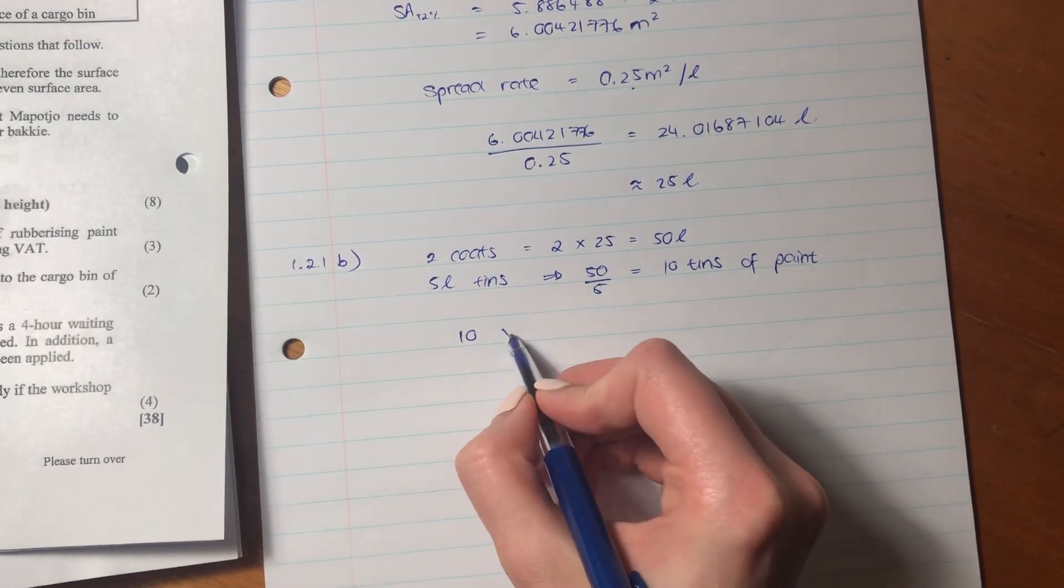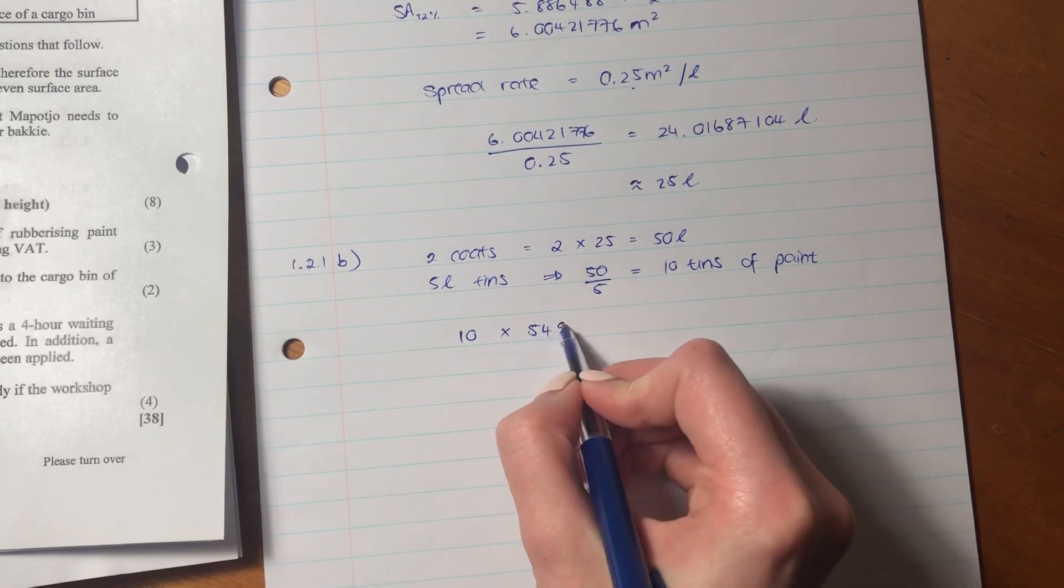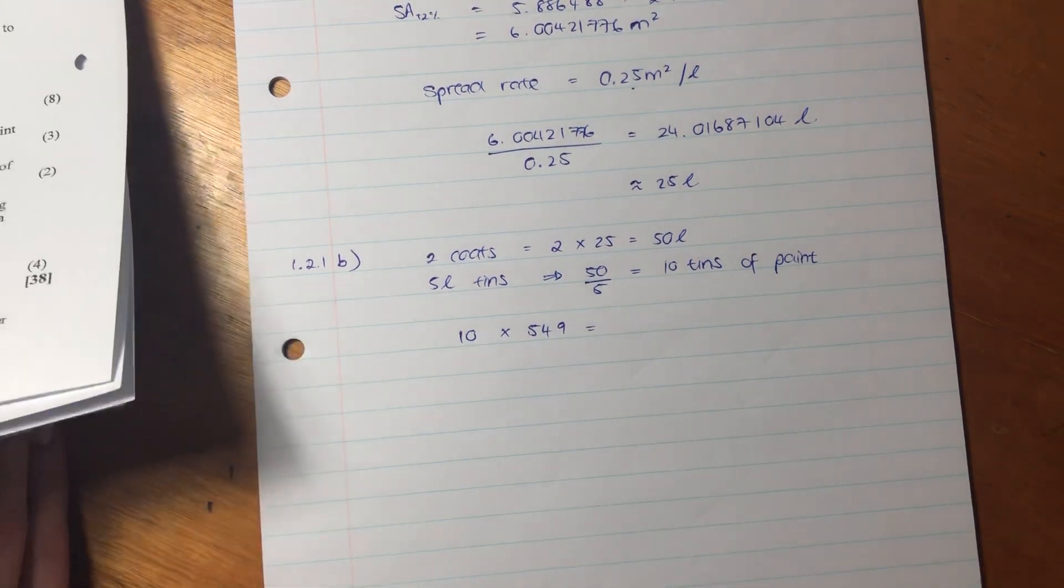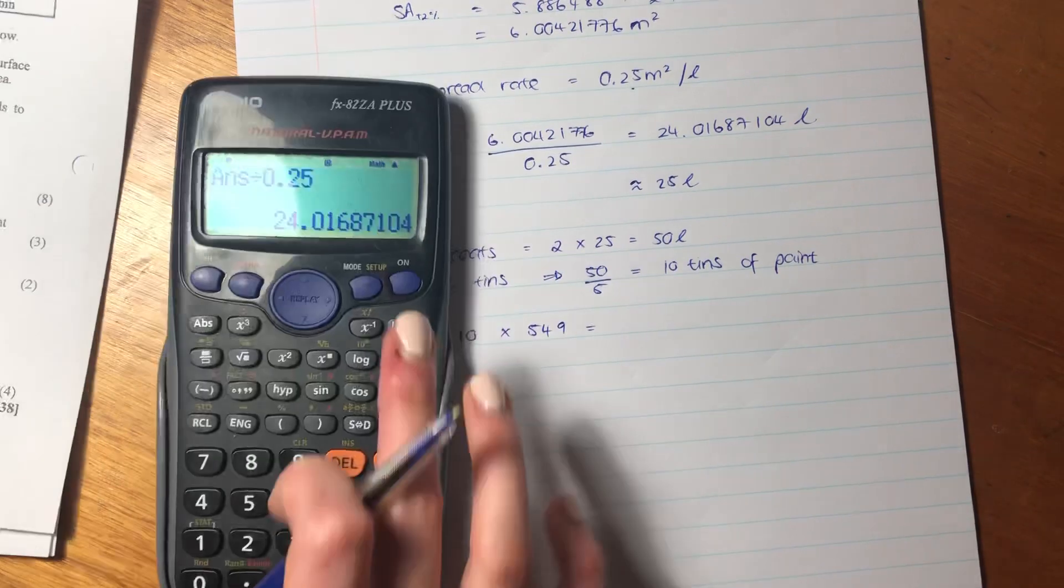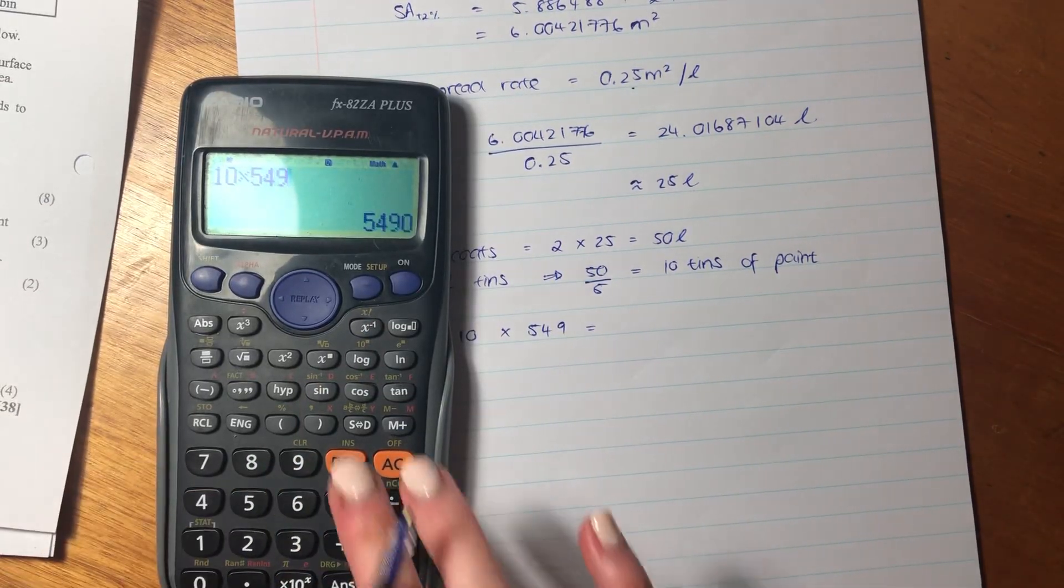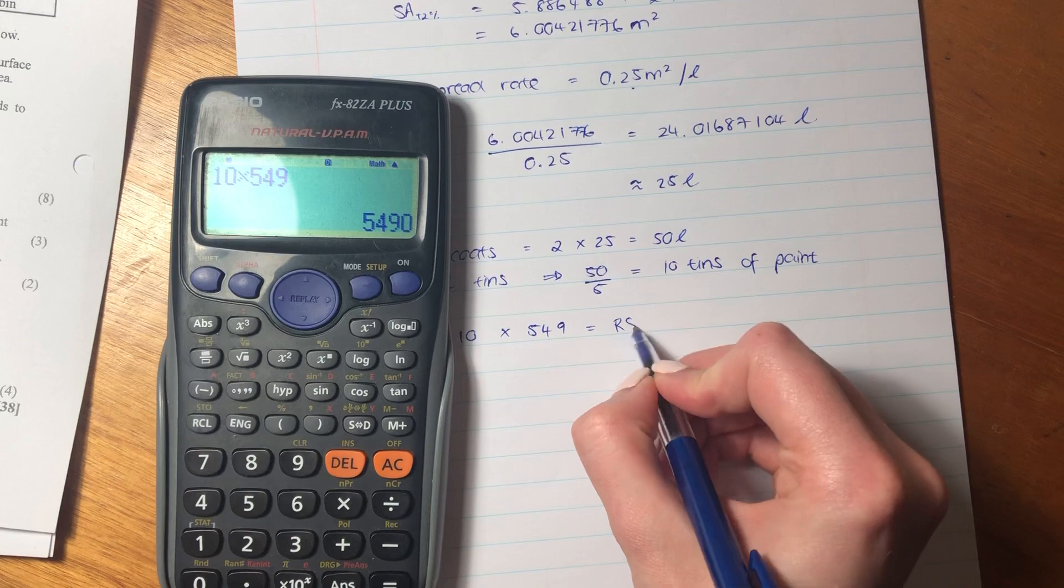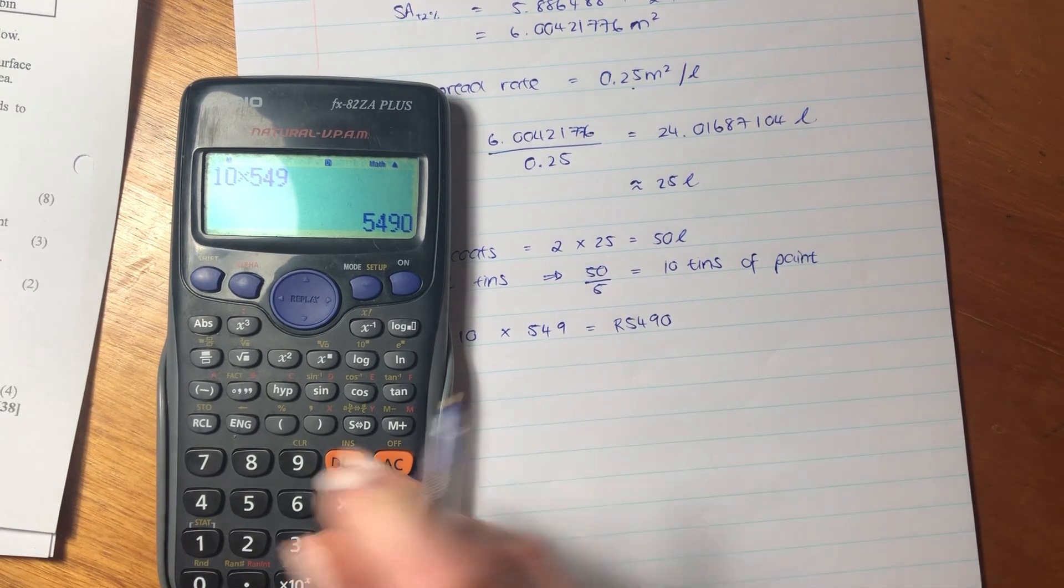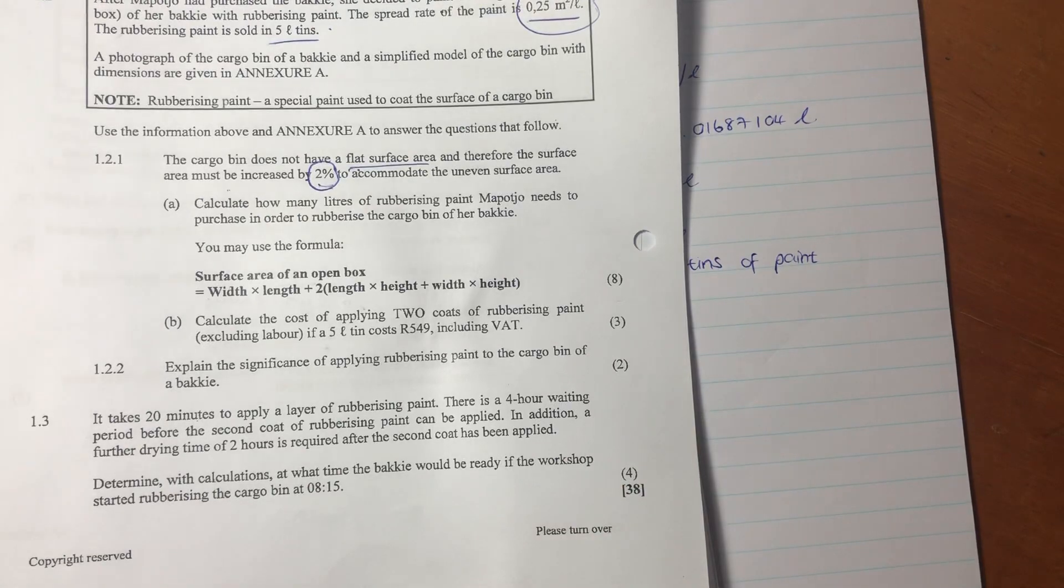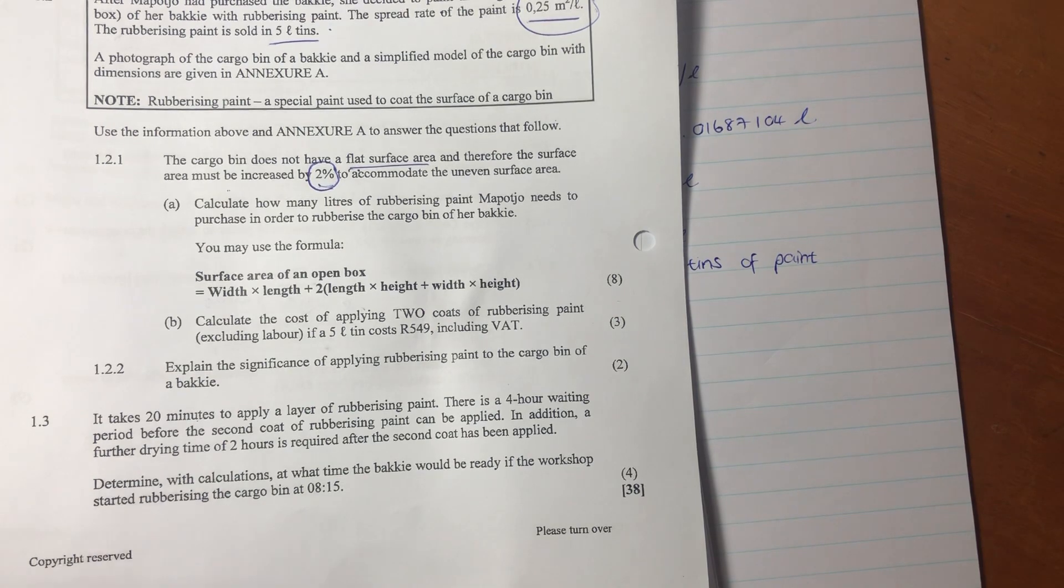So she needs 10 tins. So we say 10 tins times the price of one tin, and it's including VAT, so we don't have to put that in. Say 10 times 549. So it's going to cost her 5,490 rand to buy all these tins. So it's important with these questions because they build on each other. So it's important to understand the scenario.